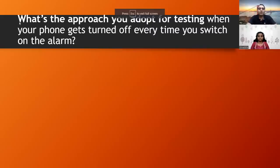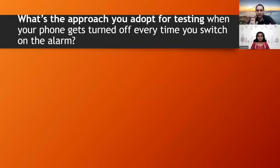Now this is a mobile testing scenario. Your phone has an alarm feature. Whenever you switch on the alarm and set the timing — say you want to wake up at 6:30 AM — your phone gets turned off. What approach will you adopt for testing this, and how will you try to identify the root cause?